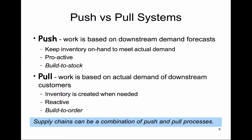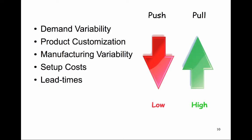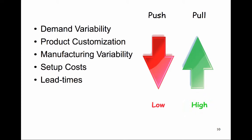Supply chains can be a combination of both push and pull processes. A push system is typically implemented when demand variability is low, product customization is minimal, manufacturing variability and setup costs are low, and lead times are short. A pull system is just the opposite: high demand variability, high degree of customization, high manufacturing variability and setup costs, and lead times may be longer.